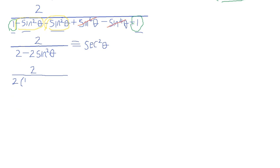We now factorize 2 - 2sin²θ. The common factor is 2, so it becomes 2(1 - sin²θ). There is a 2 in the numerator and a 2 in the denominator, and when they divide they cancel each other, leaving just 1 over (1 - sin²θ).